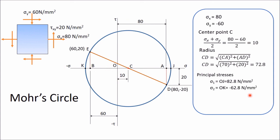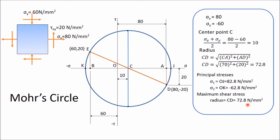To get the maximum shear stress, draw a vertical line at center C — the topmost and bottommost points of the circle represent maximum shear stress. The maximum shear stress equals the radius of the circle, which is 72.8 N/mm². At these two points, the normal stress equals OC = 10 N/mm² (positive) in both cases. In this way you can determine principal stresses and maximum shear stress. Thank you for watching this video.